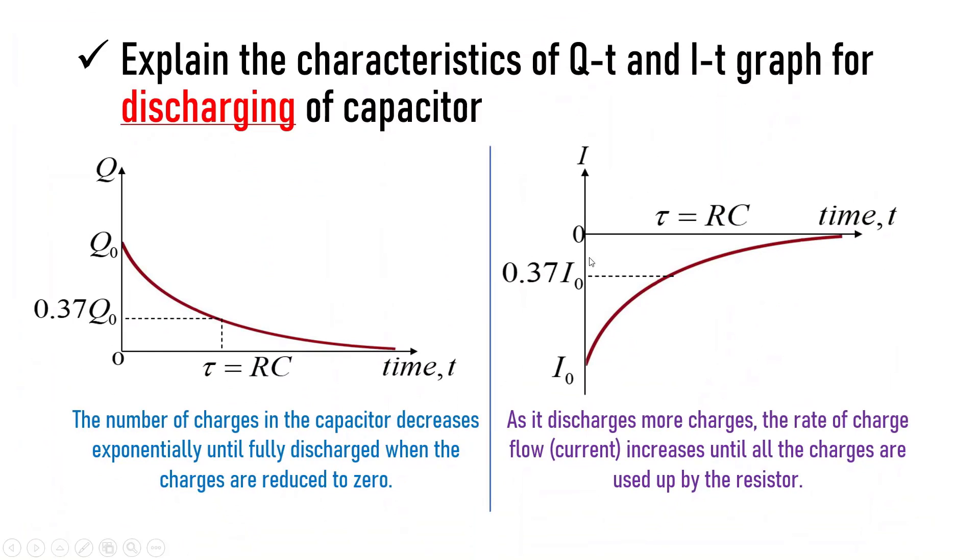Next, to explain the characteristics of Q-t and I-t graphs for discharging of a capacitor. For the Q against t graph, the number of charges in the capacitor decreases exponentially until fully discharged when the charges are reduced to zero.